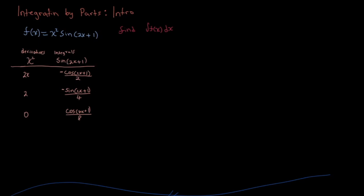Now the next thing I'm going to do is put a minus sign here — and you'll see why in just a bit. We put a plus sign here and a minus. You're going to alternate: minus, plus, minus. And if the columns go on, you just keep going minus, plus, minus, plus until you get to the 0.